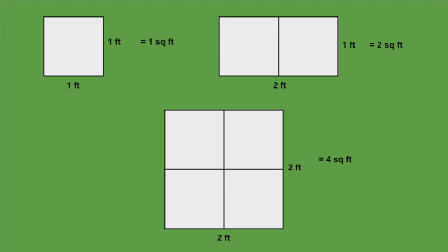It may be tempting to think that a square that's two feet long on each side would be two square feet, but it isn't. That would actually be four square feet. You may recall that squaring numbers means multiplying them by themselves. So two squared equals four, just like we saw in that example. An eight by eight foot square would be 64 square feet because eight squared is 64.